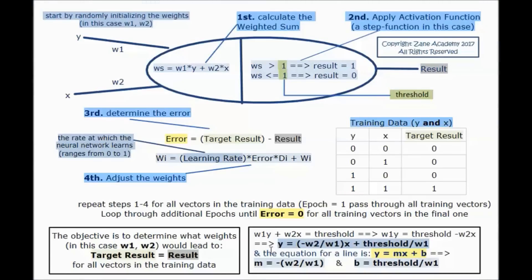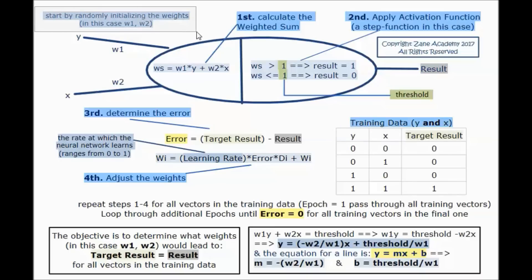The equation for a line is y = mx + b. If the zeros and ones are linearly separable, we want to obtain the equation of the line that separates them. This is why x1 and x2 from the previous tutorial were renamed to y and x.